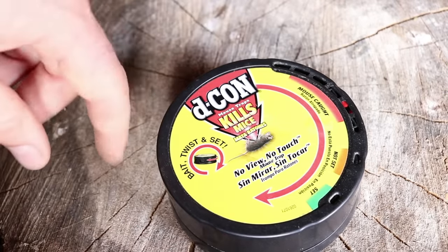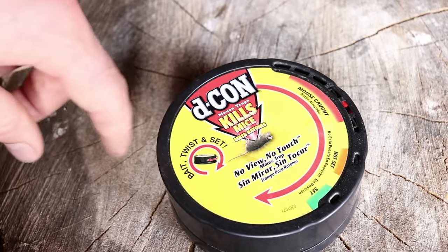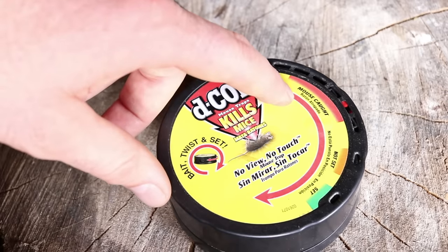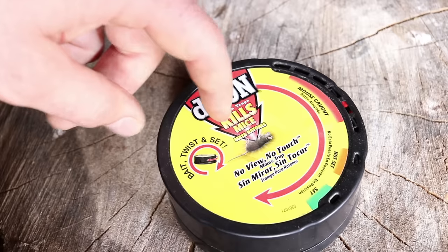Now some mice were cautious. They went in, turned around, and came back out. But one mouse went inside, went a little too far, pushed the mechanism, it spun around, and we got it.